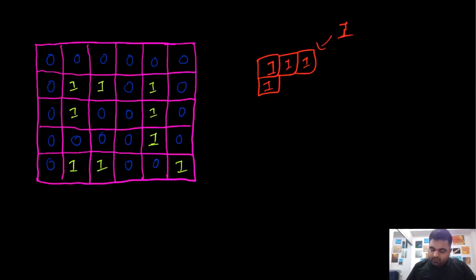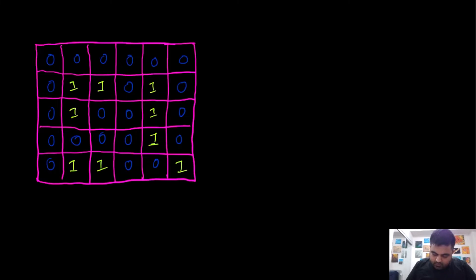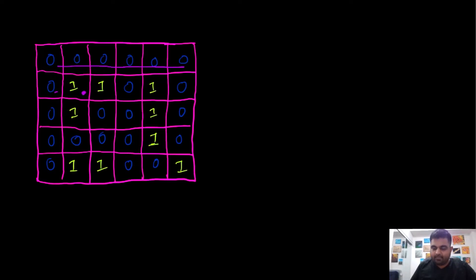The most basic approach is that we start traversing through the entire grid. We try to see that at any moment, if we find a one — which means we've found a body of land — we need to find all the ones connected with that one. We are going to call our function, and what that function is going to do is iterate over all the adjacent cells, keeping on iterating until we exhaust all the ones connected with this original one — exhausting all the elements in the same set.